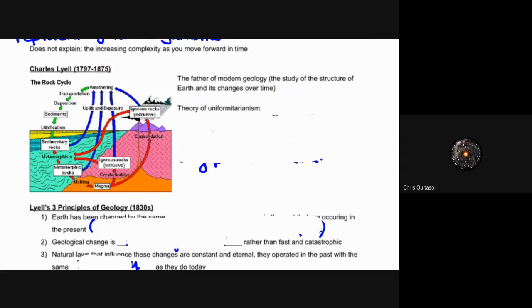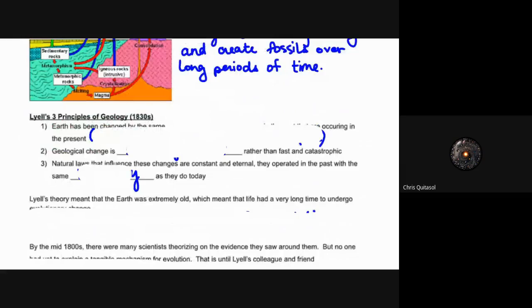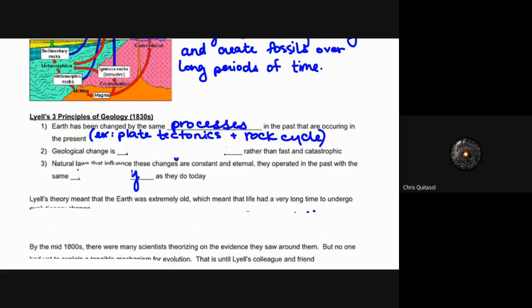Charles Lyell, early 1800s to the late 1800s, was the father of modern geology - the study of the earth and structures of the earth as they change over time. He came up with the theory of uniformitarianism, the idea that these geological changes are so slow they create fossils over a very long period of time. That slow, long period of time allowed for him to create three principal ideas of geology around the early 1800s. He came up with the idea that this earth-changing process in the past is occurring in the present as well. So the plate tectonics, rock cycle, water cycle - all of those things are contributing to that process of geological change even today. That geological change is very slow and very gradual, the complete opposite of that fast catastrophic nature that was discussed by Cuvier.